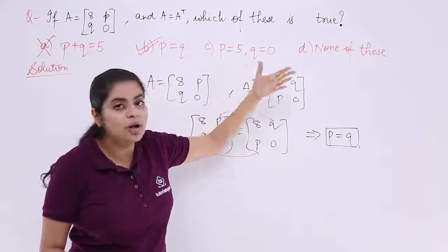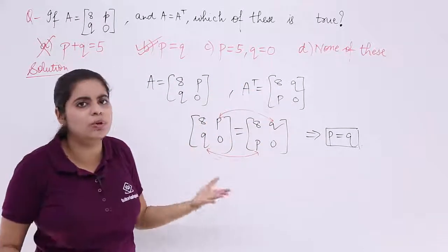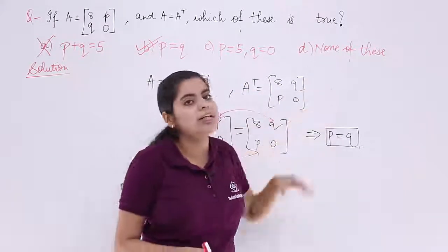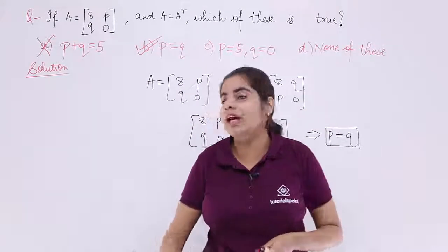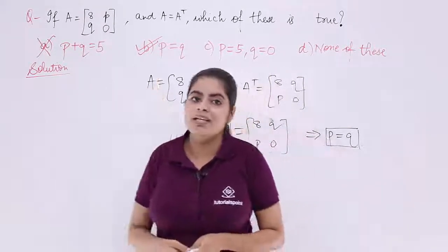The other options are all vague. P is 5, Q is 0, not possible. Similarly, none of these would not be the answer because we have found out one answer, P is equal to Q.